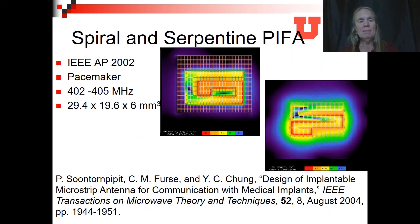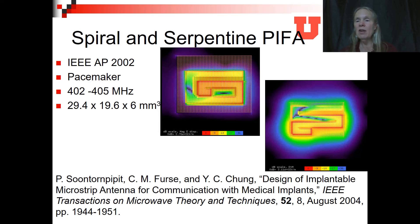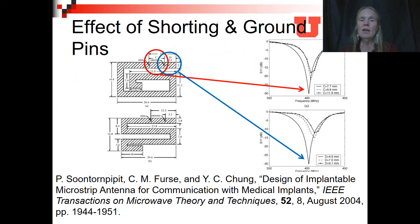The spiral and serpentine PIFA had interesting current distributions. In the spiral case, strong current was seen at the end of the antenna — unusual for a dipole — because of cross-coupling between the arms. In the serpentine case, there is less of that behavior. The frequency chosen was 402 to 405 megahertz, good because an antenna could still be built small enough to fit on the pacemaker while being low enough in frequency to transmit outside the body. We also considered the effect of the shorting and ground pins: the red pin is the feed pin, the blue pin is the ground or shorting pin, and moving these changes the resonant frequency and the depth of the S11.